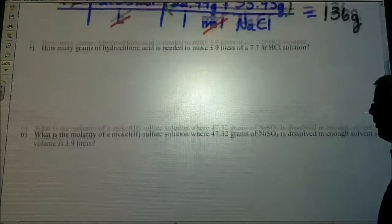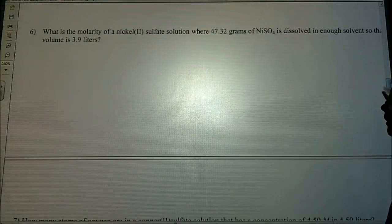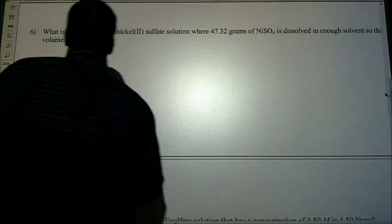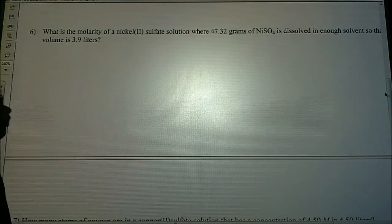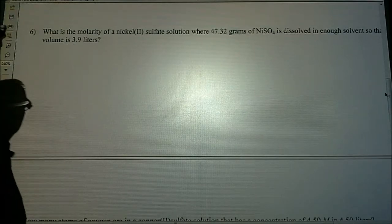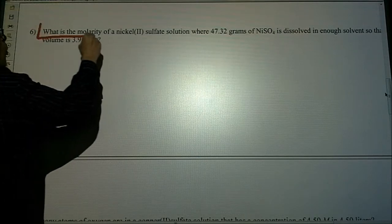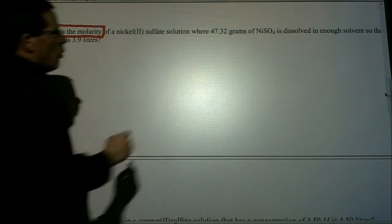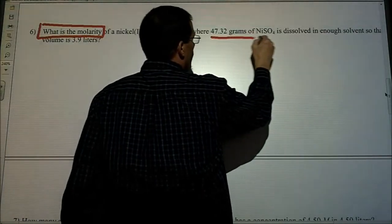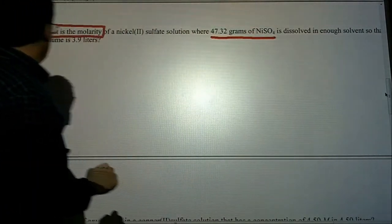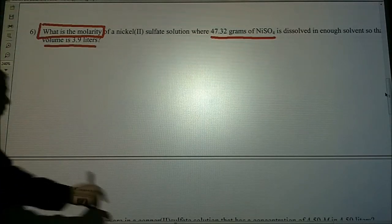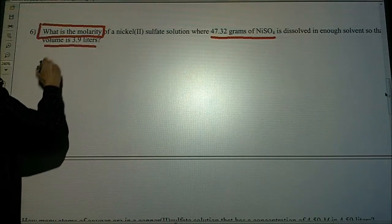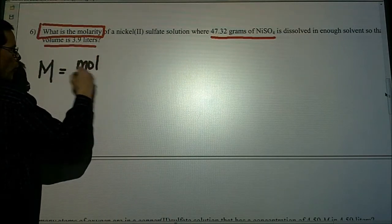Let's look at number six. Number six asks, what is the molarity of a nickel sulfate solution where 47.32 grams of NiSO4 is dissolved in enough solvent so the total volume is 3.9 liters? Here's our question: what is the molarity? We're given 47.32 grams of the nickel sulfate, and we're given a volume of 3.9 liters. Molarity, big M, represents moles over liters.